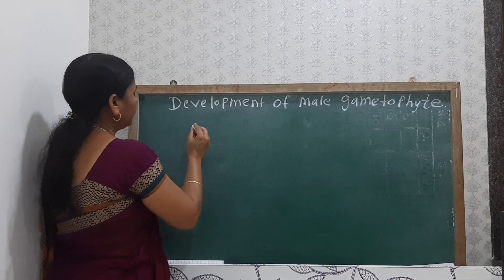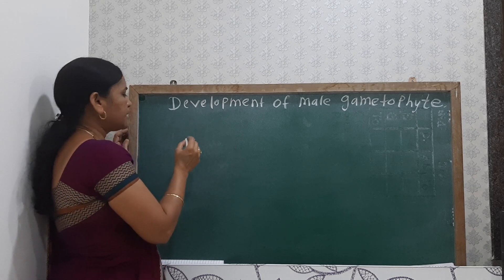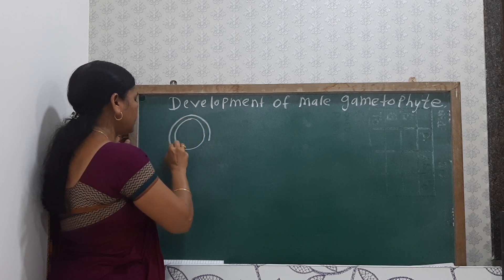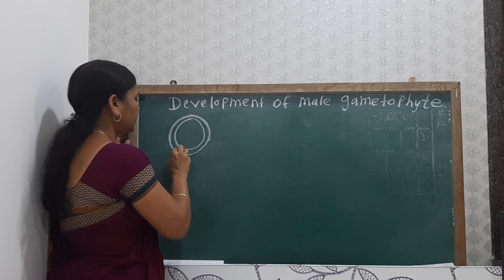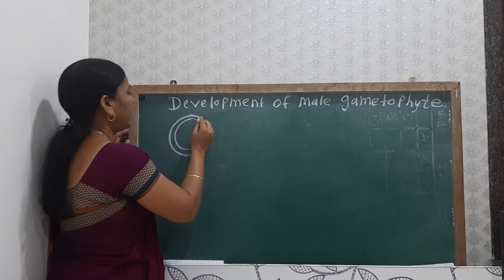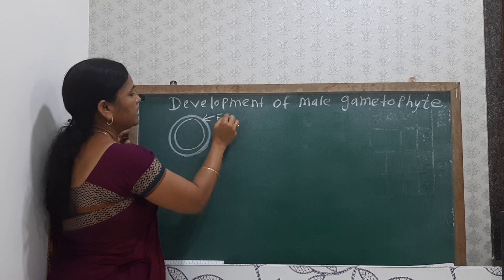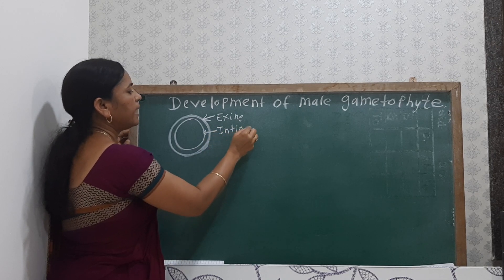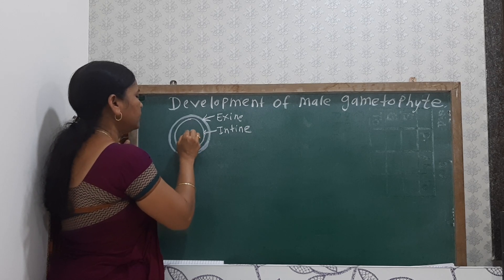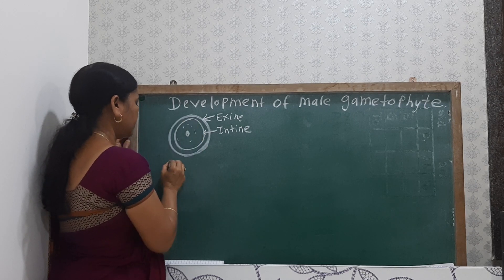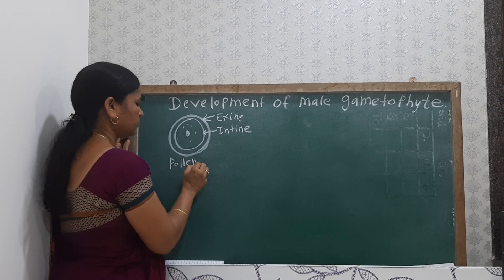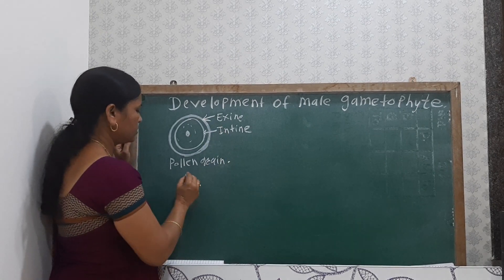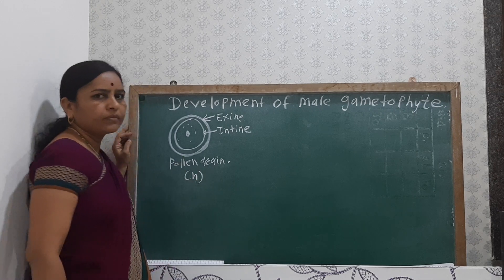Here in the pollen grain, when pollen grains are in the pollen sac, we can see the structure of the pollen grain. The outer wall is thick, which is known as the exine. The inner wall is thin, known as the intine. It is the uninucleated single cell, the pollen grain, also known as the microspore. This pollen grain is the haploid pollen grain.